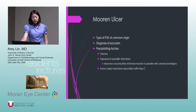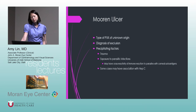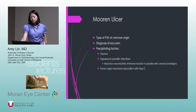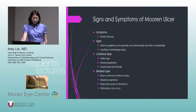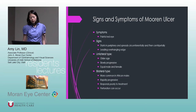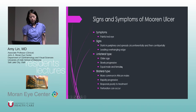Mooren ulcer is a type of PUK of unknown origin — a diagnosis of exclusion. Precipitating factors include prior trauma, exposure to parasitic infections due to thought cross-reactivity with corneal autoantigens, and some association with hepatitis C. Signs are a painful red eye starting in the corneal periphery, spreading circumferentially and then centrally. The classic sign is a leading overhanging edge in the cornea. It can be unilateral or bilateral. The unilateral type occurs in older patients with equal sex distribution and is slowly progressive.